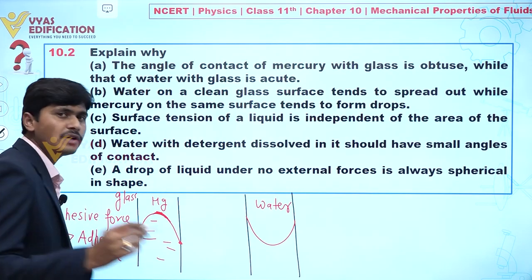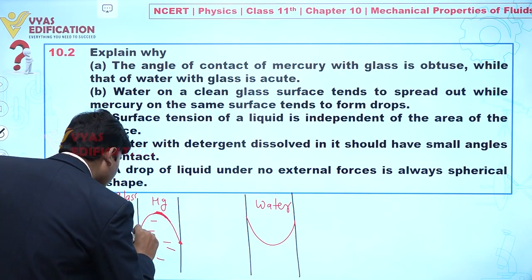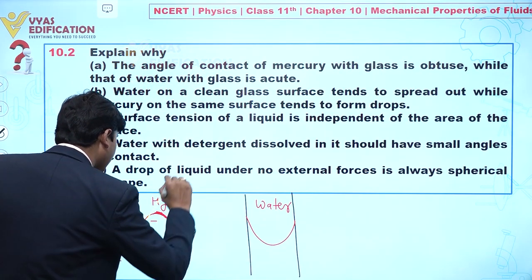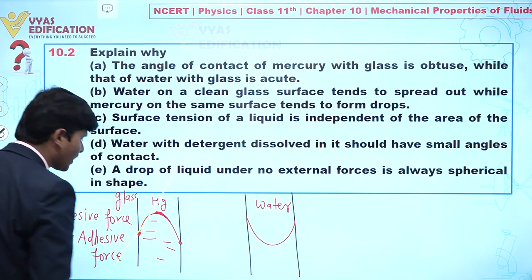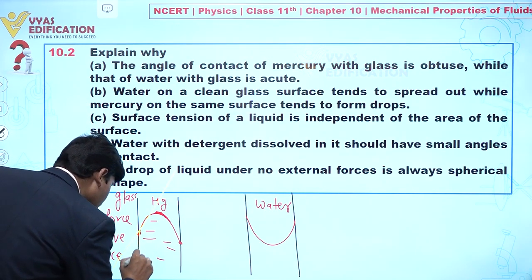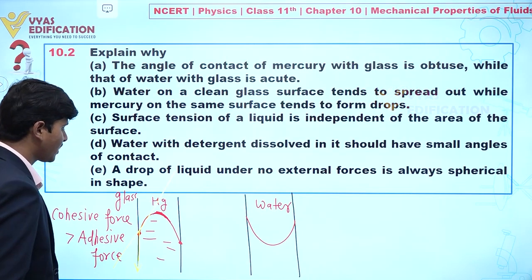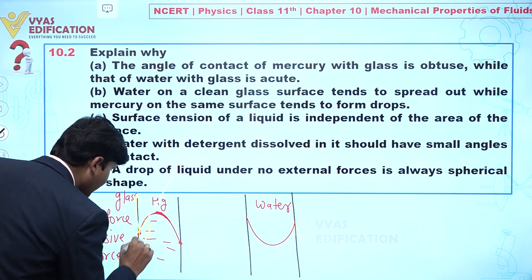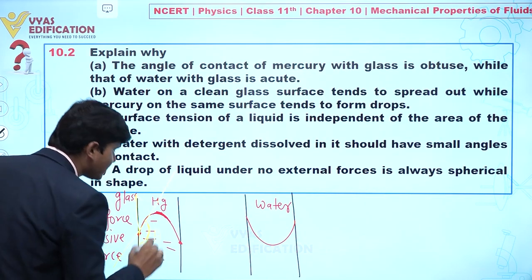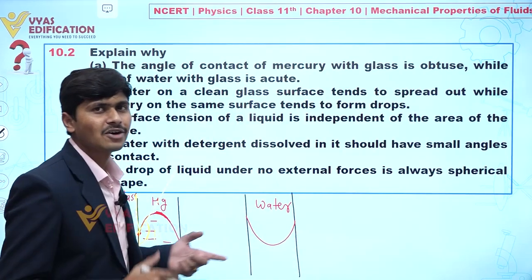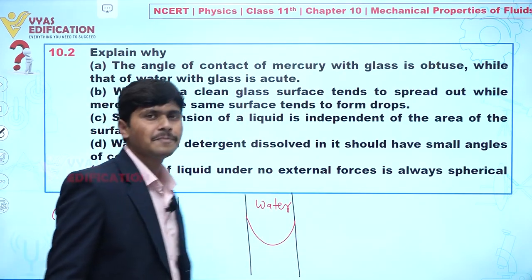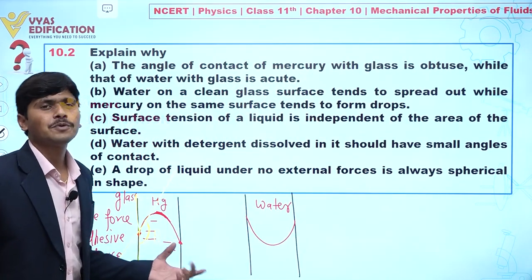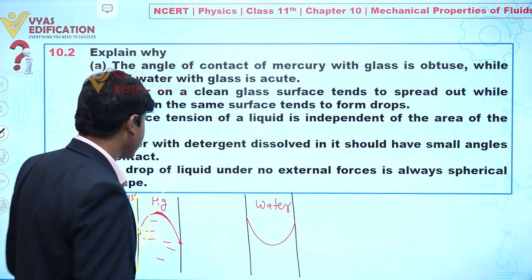To determine the angle of contact, at the point of contact we draw a tangent to the liquid surface, and we also draw a tangent along the glass surface. The angle between these two tangents is the angle of contact. For mercury, this theta is greater than 90 degrees, so it is an obtuse angle.